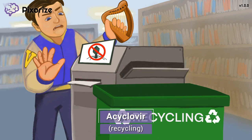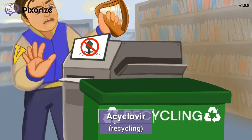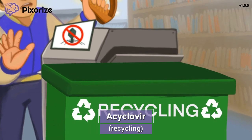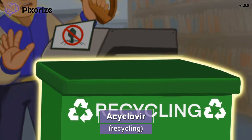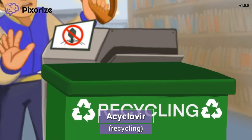For this mnemonic, we are in the high school library where a band of students is trying to use the printer. In the library, we often see these large recycling bins right next to the printers. This recycling bin is our symbol for the drug acyclovir — recycling for acyclovir. When you see acyclovir on your exam, think back to our anchoring symbol for this scene, this recycling bin.